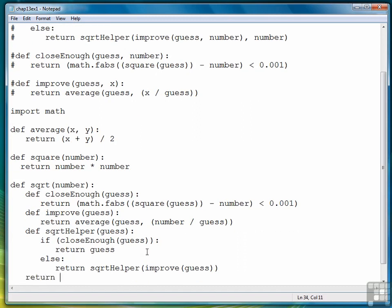Finally, to kick it all off, we call square root helper with the argument 1.0.